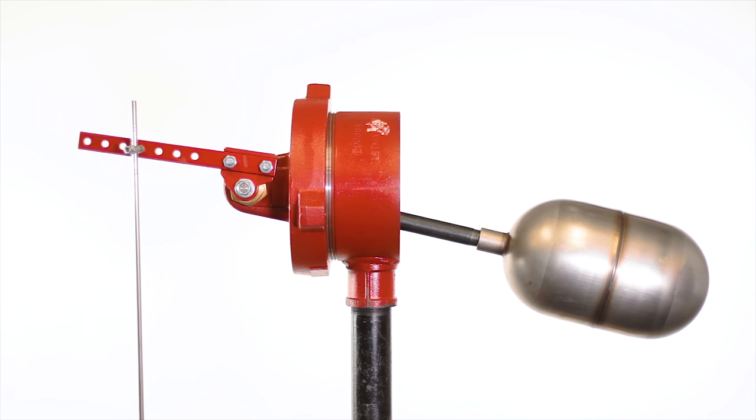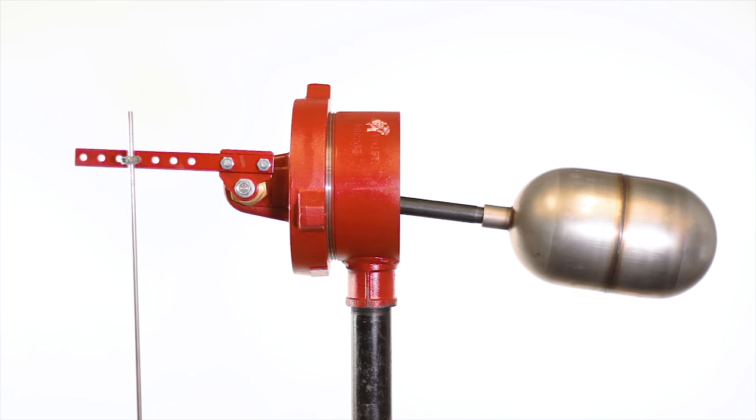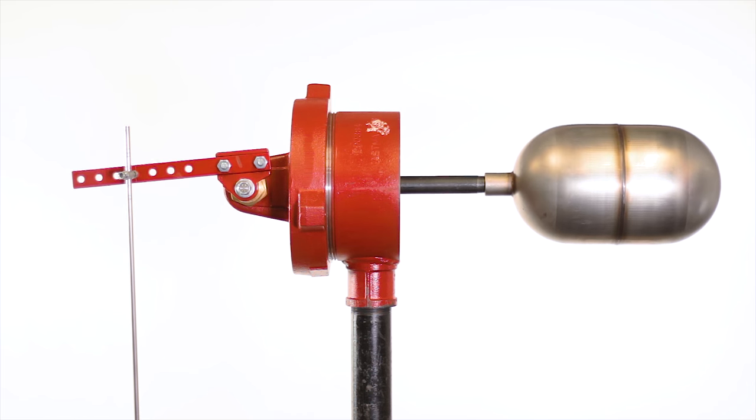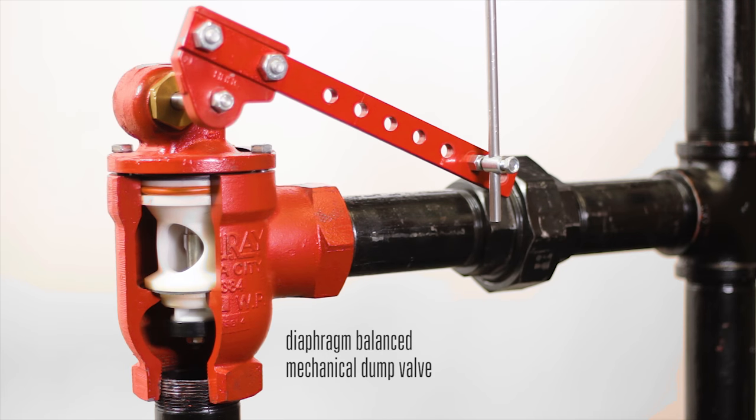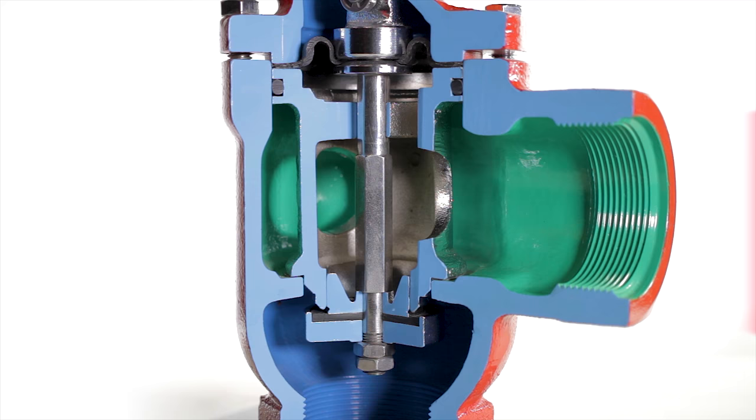As the liquid level in the vessel begins to rise, the float moves upward, forcing the trunnion lever downward. This pushes the valve lever down and opens the valve.